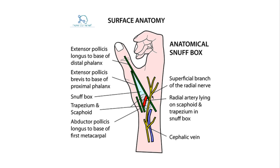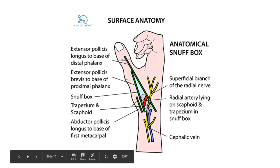This is a surface anatomy picture of the anatomical snuff box — this is high yield on the NCCAOM board exam. We have the extensor pollicis longus tendon, extensor pollicis brevis tendon, and the abductor pollicis longus tendon. Inside we have the radial artery — this is where LI5 is. A high-yield question on the NCCAOM is what could be punctured if you insert into LI5: the superficial radial nerve and radial artery. We also have the cephalic vein.